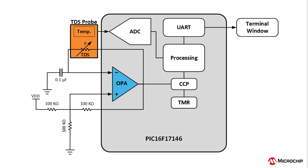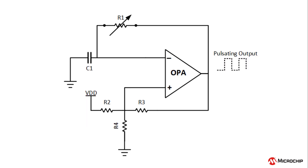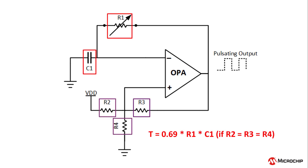The TDS probe is connected as an input to the op-amp and acts as a variable resistance. The input value of the capacitor determines how quickly the oscillator oscillates. By varying this capacitor value, the frequency range can be modified. In the implemented relaxation oscillator circuit, the capacitor was set to 0.1 microfarads to measure TDS values between 0 and 2000 milligrams per liter. This will generate pulses with a frequency range between 1 Hz and 40 kHz for a TDS range of 0 to 2000 milligrams per liter. The time period of the pulses generated by the op-amp can be determined by the equation T equals 0.69 times R1 times C1.